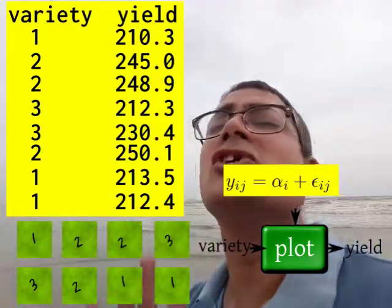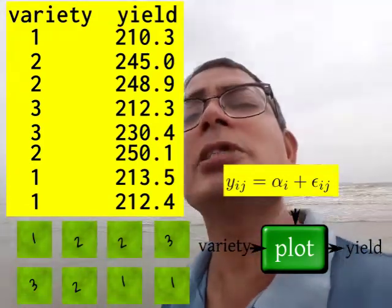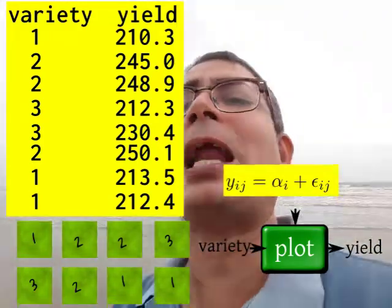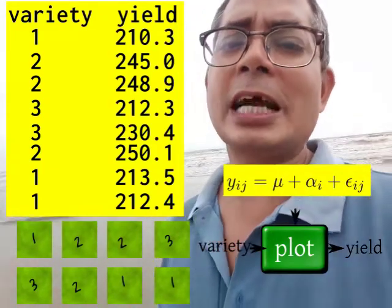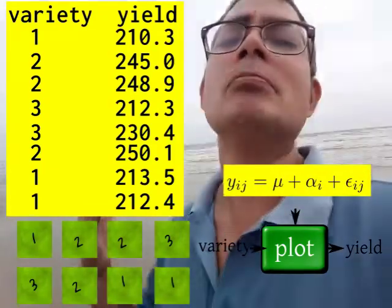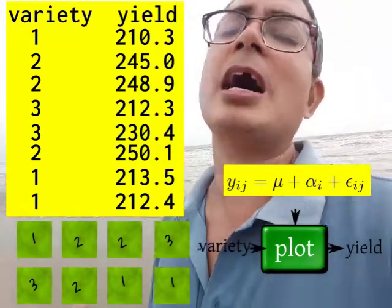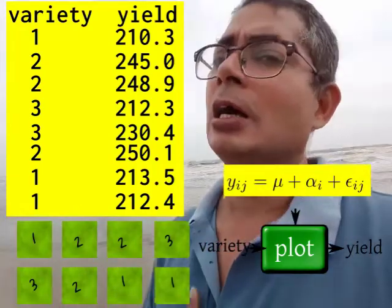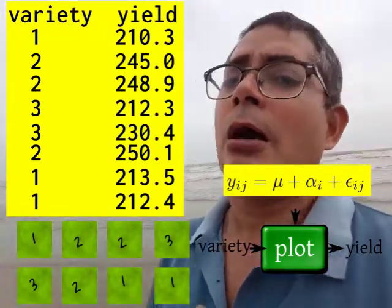So we just rewrite the same model using a slightly different parametric form. In this case, I have y_ij equals mu plus alpha_i plus epsilon_ij. Very same thing.